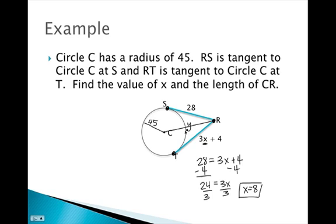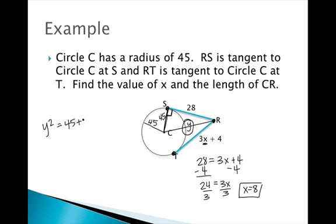Solving for Y — the length of CR — is a little trickier. Theorem 10.1 states that the radius is perpendicular to the tangent line at the point of tangency, so we have a right triangle with legs of length 45 and 28. Using the Pythagorean theorem, since Y is the hypotenuse: Y squared equals 45 squared plus 28 squared. Solving that out, Y equals 53.